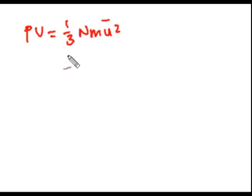Let's write again that expression that we have just derived: PV equals one-third NMU squared bar. Using the ideal gas law equation, which is PV equals NRT, let's equate these two.